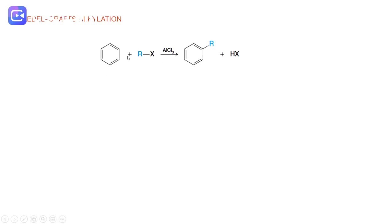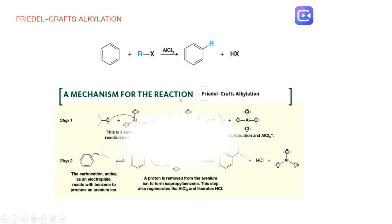Friedel-Crafts alkylation means the aromatic ring will react with alkyl halide in the presence of Lewis acid to have a final product which has an alkyl group substituted on the aromatic ring. The mechanism of this reaction will start by reacting between the alkyl halide, chloropropane, with Lewis acid to have this complex.